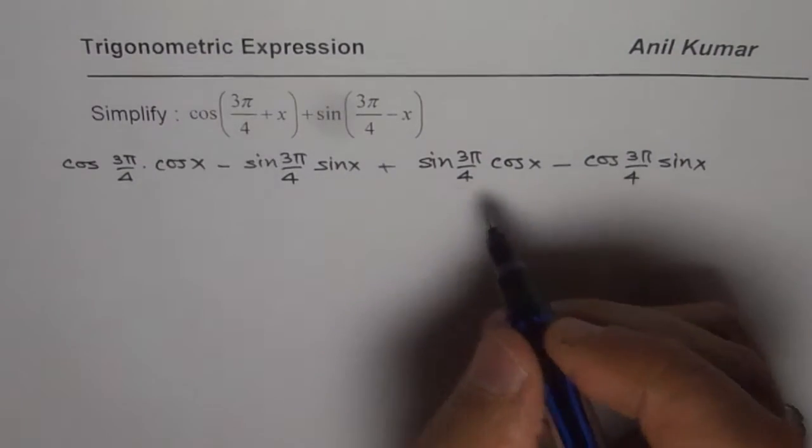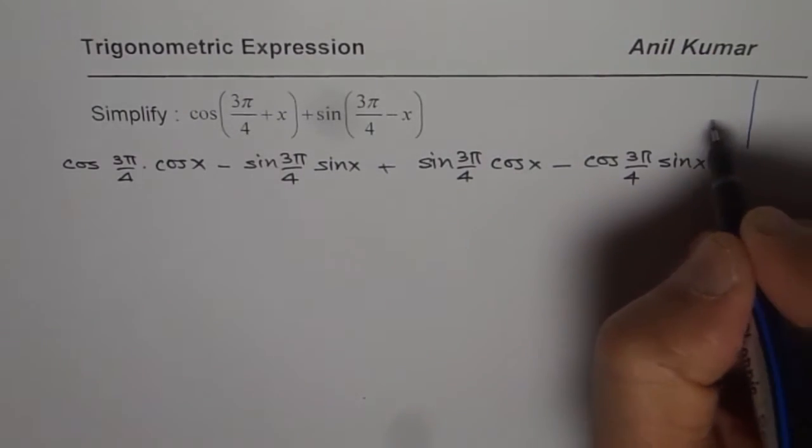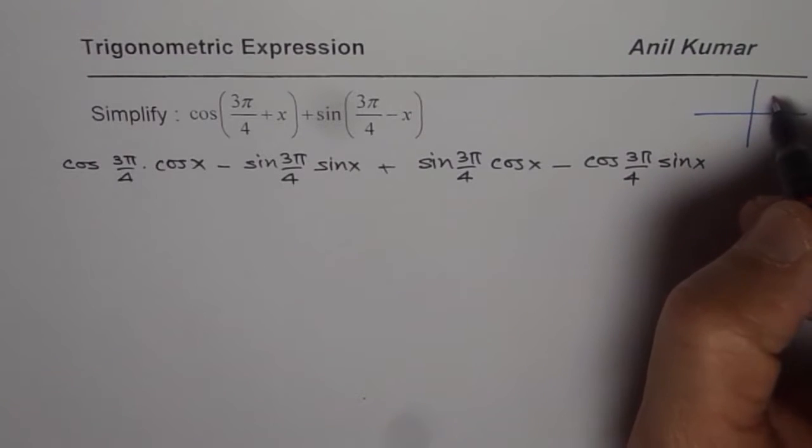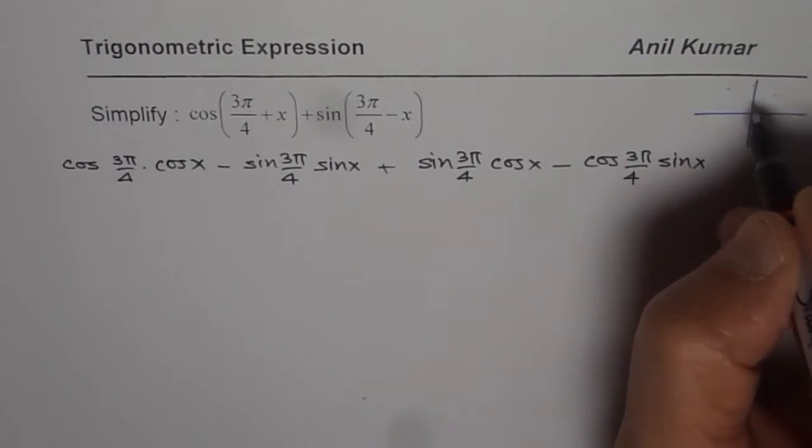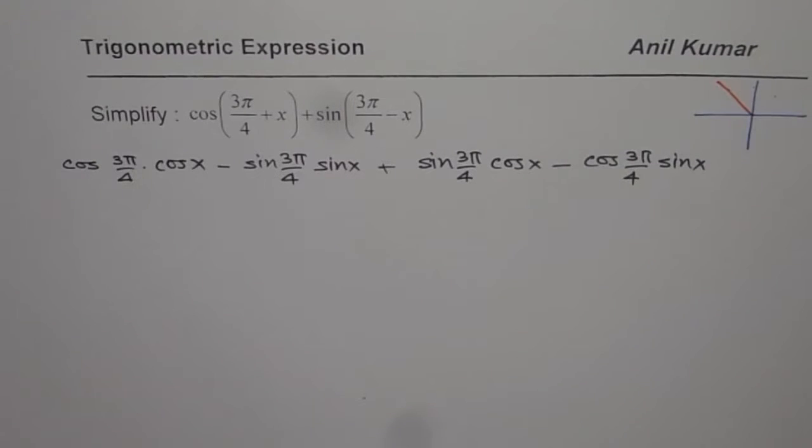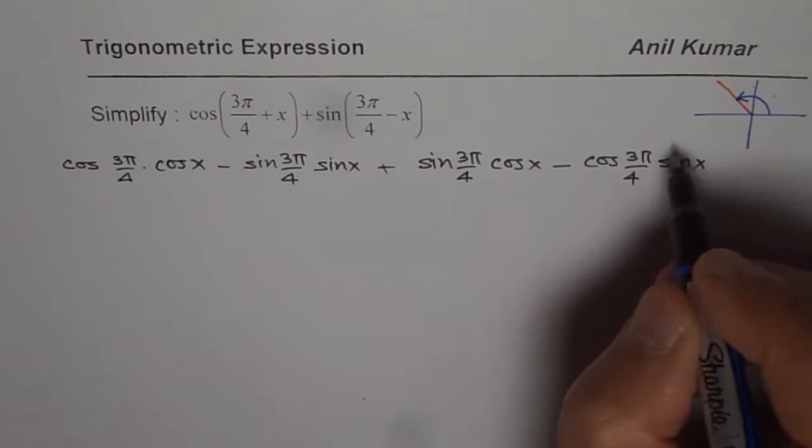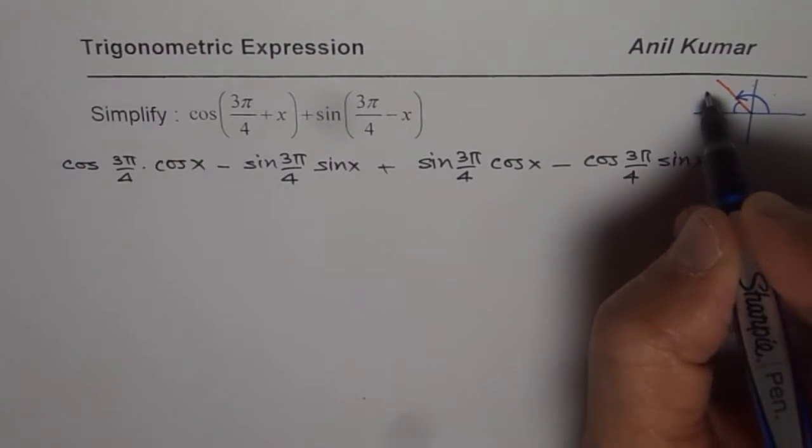Now what is cos(3π/4) and sin(3π/4)? 3π/4 means π/4, 2π/4, 3π/4. That means we are talking about our terminal arm being in second quadrant. Now in this quadrant, the acute angle is π/4.